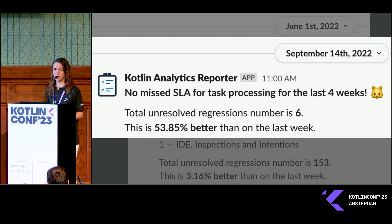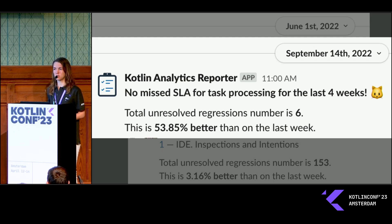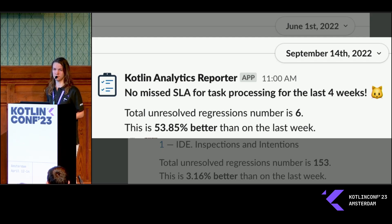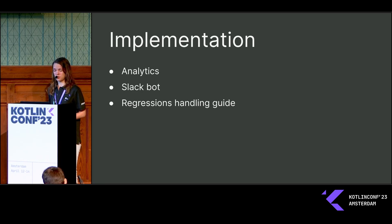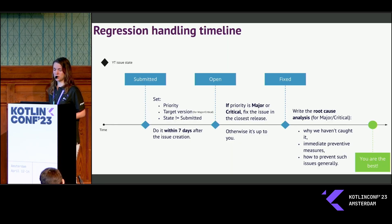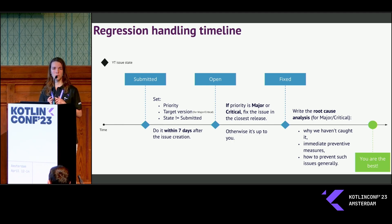The team had time to fix the remaining 50 regressions, and indeed in September we had only six open major or critical regressions in our tracker. Ever since, we have kept this number really low — usually around two to six or seven. This is about control and processes.